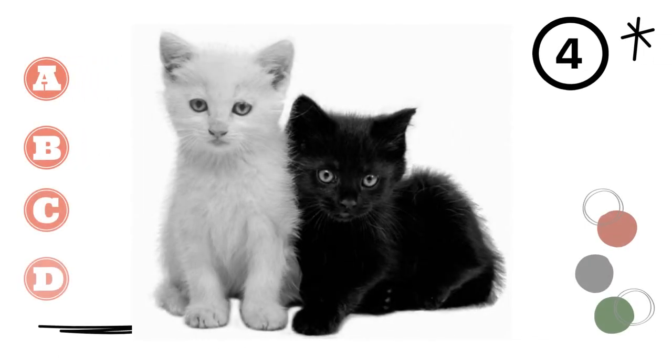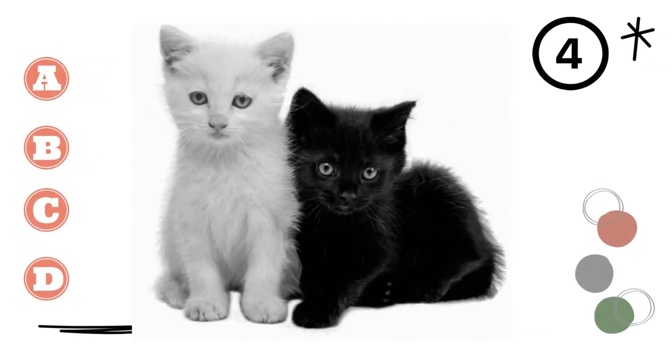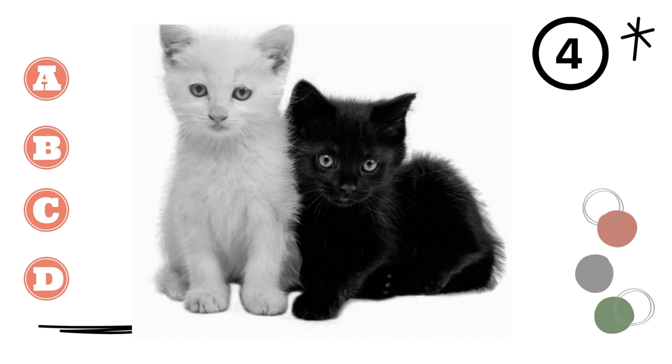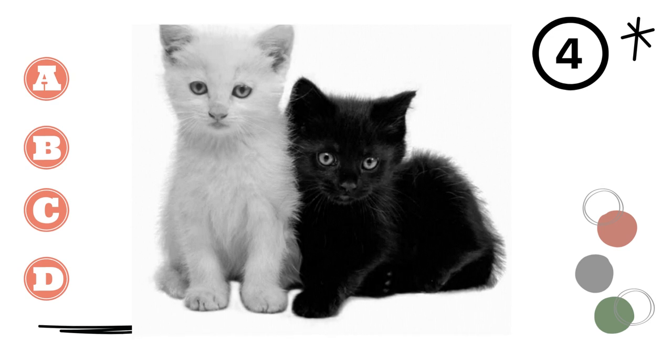4. A. These are kittens. B. These are rabbits. C. These are puppies. D. These are goats.